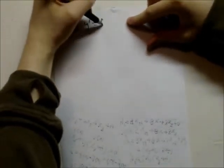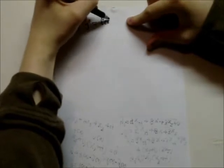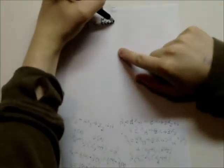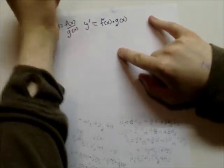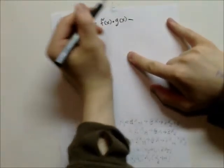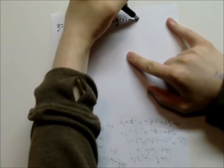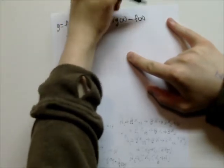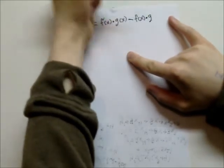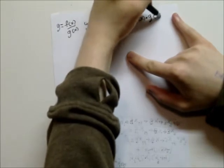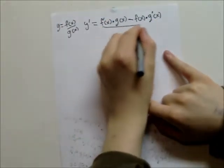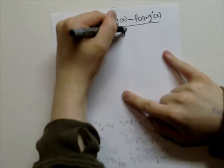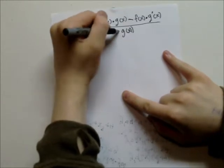So, basically, if you want to find the derivative, all you do is you just go f prime x times g of x,